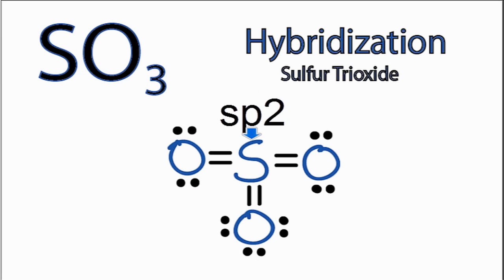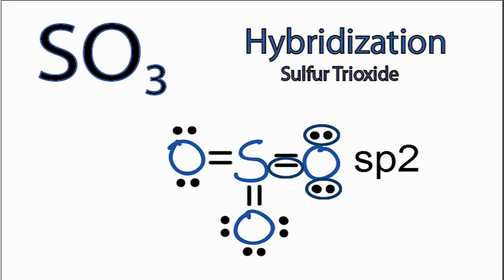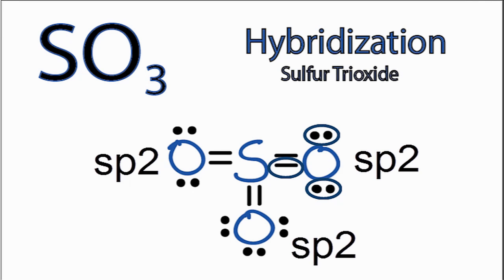For the oxygens, they're all the same, so we only need to do one. We have one sigma bond and then two pairs of unbonded electrons, giving us three regions, which is of course sp2 hybridized. All of the oxygens have sp2 hybridization. So that's the hybridization on SO3, sulfur trioxide. This is Dr. B, and thanks for watching.